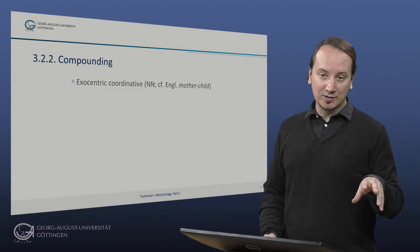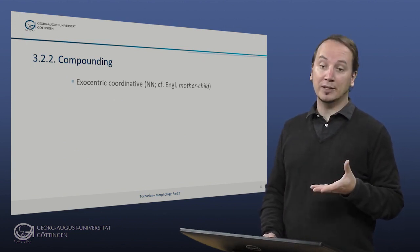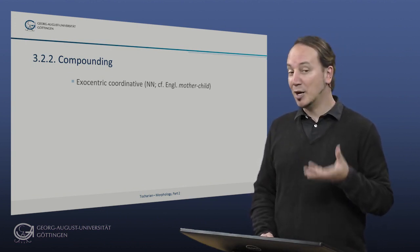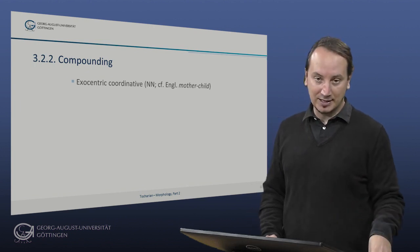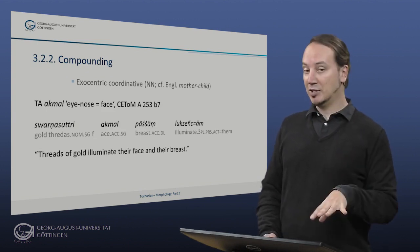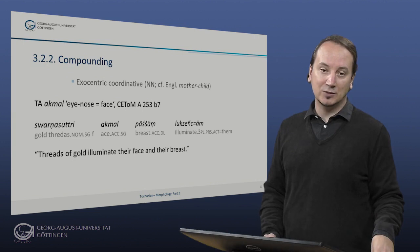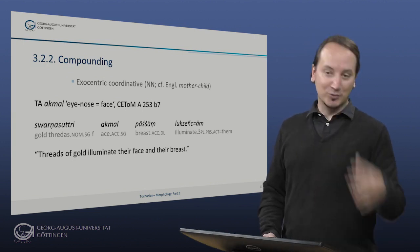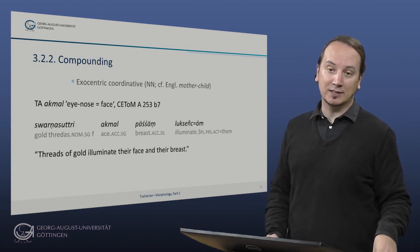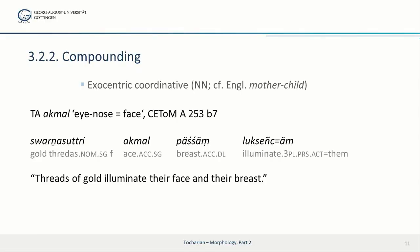The next exocentric compound type is of coordinative flavor. Here the two constituents of the compound are together referring to a complex that is equally constituted by them. The English example would be mother-child like in mother-child activities. Our example for this type comes from Tocharian A, where we find Akmal, which literally means I knows and refers to the face. And this passage is taken from the Maitreya Samet Nataka. Svaranasutri Akmal Paschun Luxenshin, Threads of gold illuminate their face and their breast.